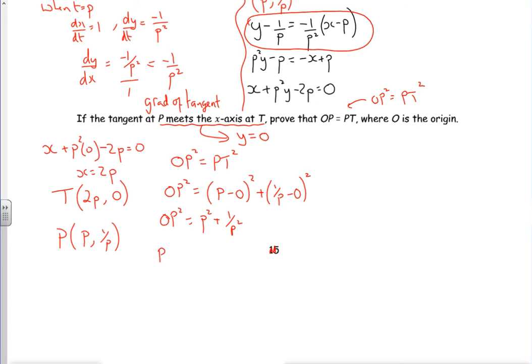Right then, P to T you've got to be a little bit more careful. I'm going to do the difference in x, that's going to be 2p take p squared plus the difference in y which is 0 take 1 over p squared. PT squared is p all squared and that's minus 1 over p all squared. So PT squared is p squared plus, now minus a minus is a plus, that's going to be 1 over p squared.